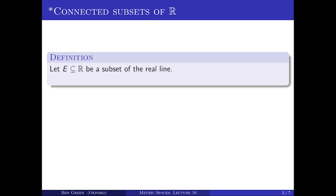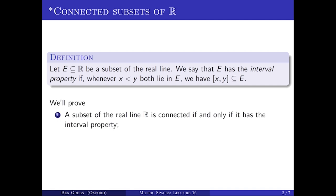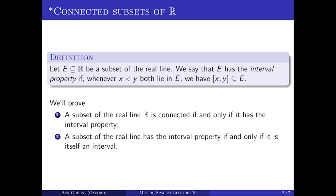Let's take a subset E of the real line. We say that E has the interval property if whenever I have two points x and y in E with x < y, then the whole closed interval [x,y] is contained in E. We need to prove two statements: first, that a subset of the real line is connected if and only if it has the interval property; and second, that a subset has the interval property if and only if it really is an interval.